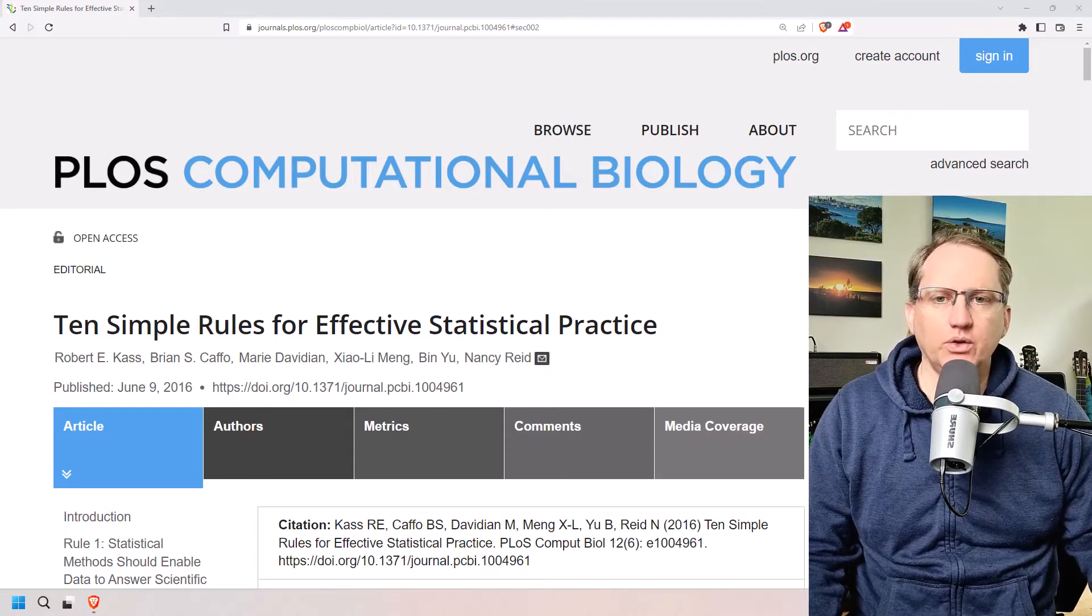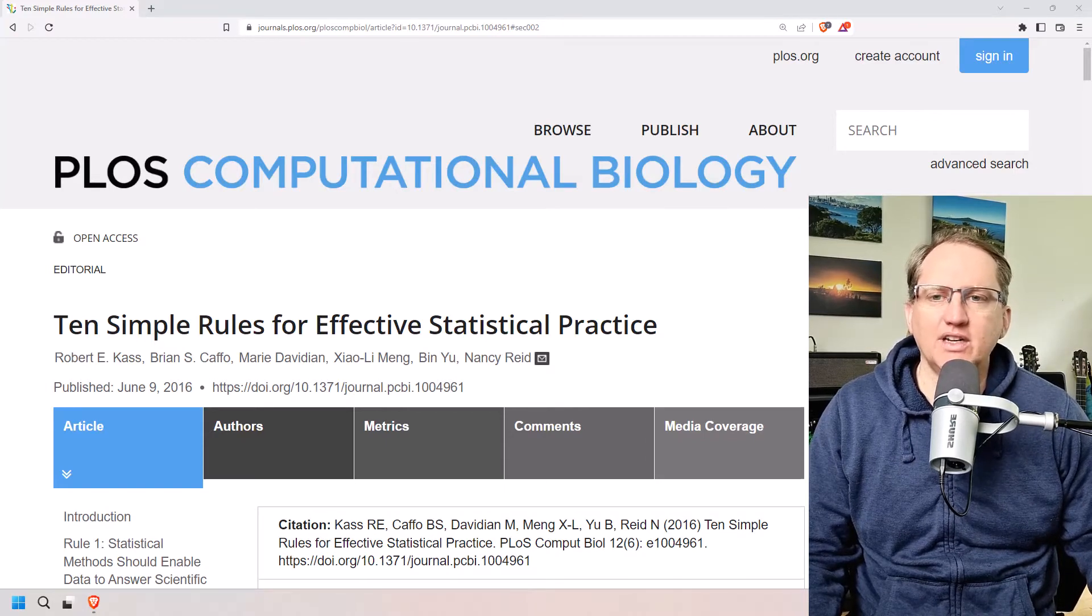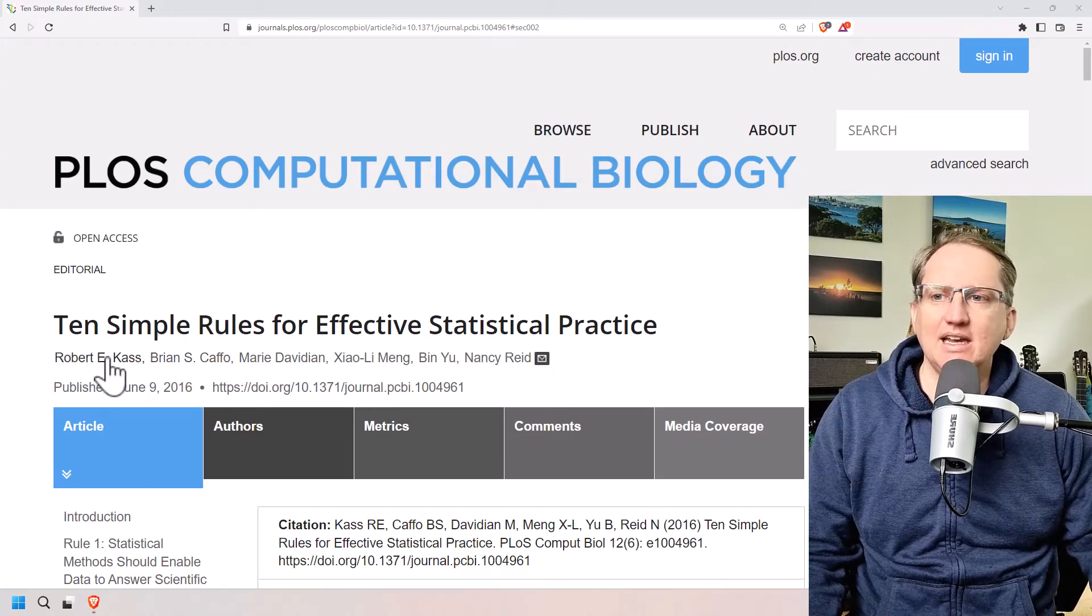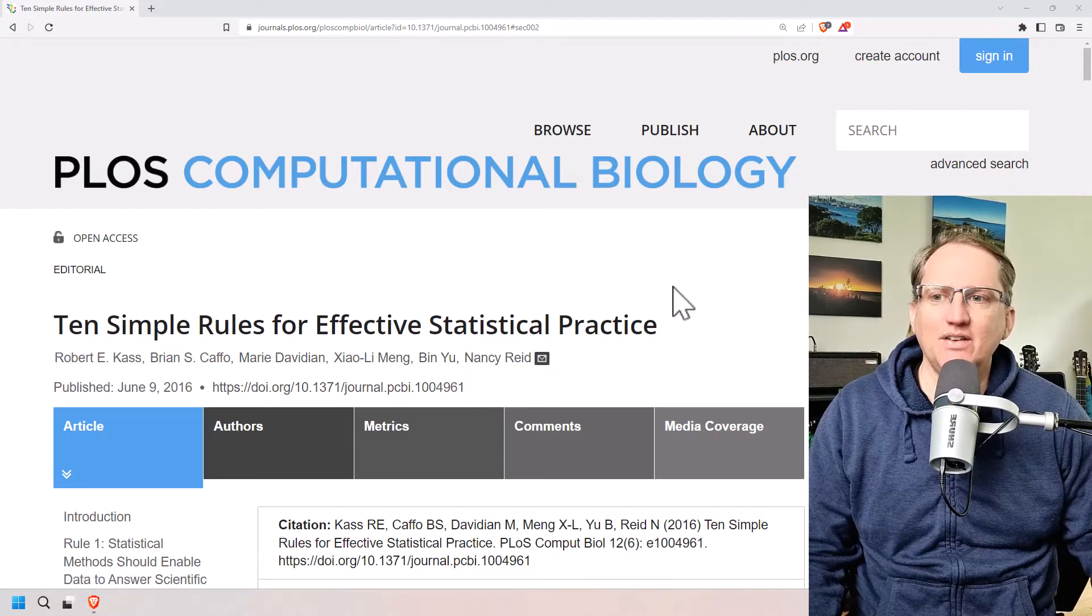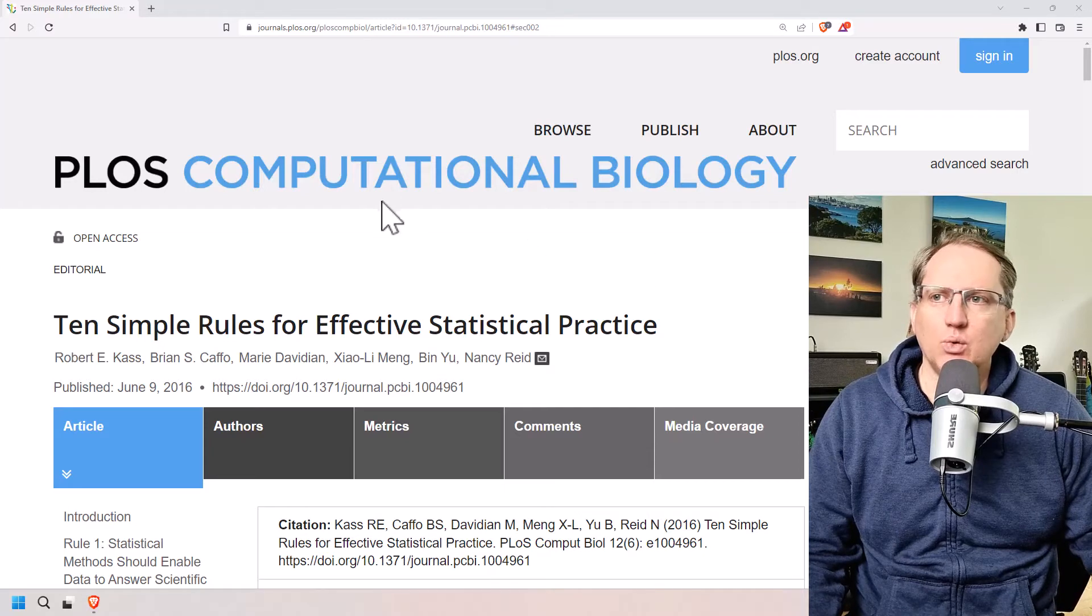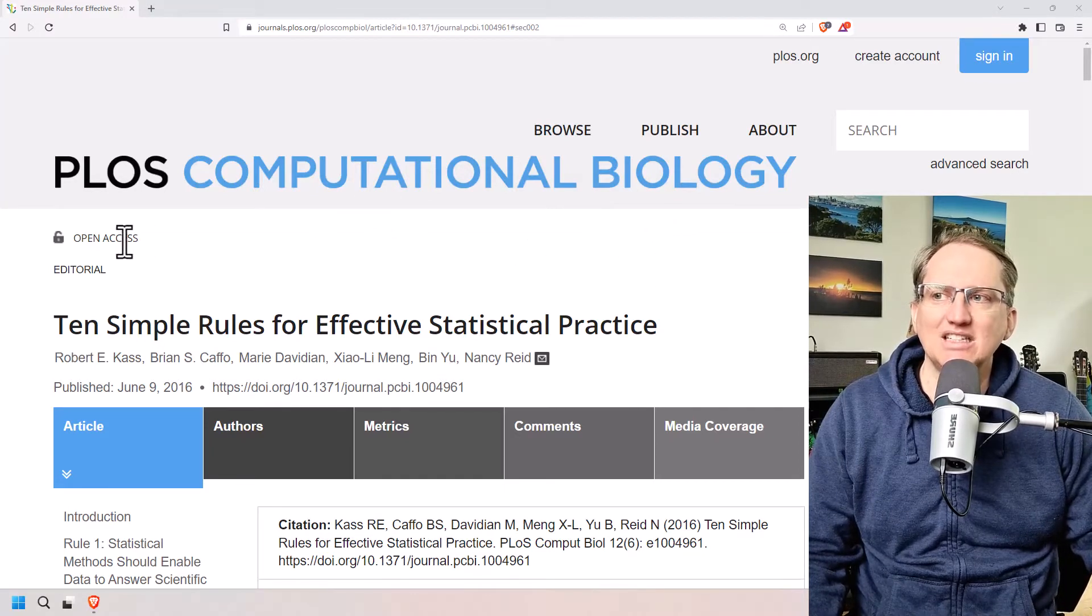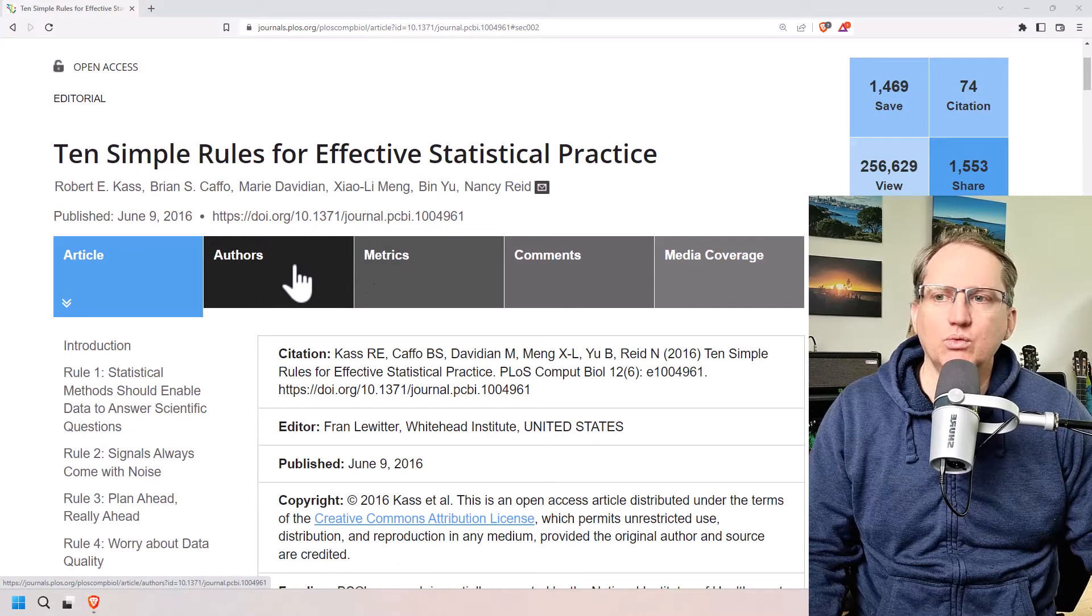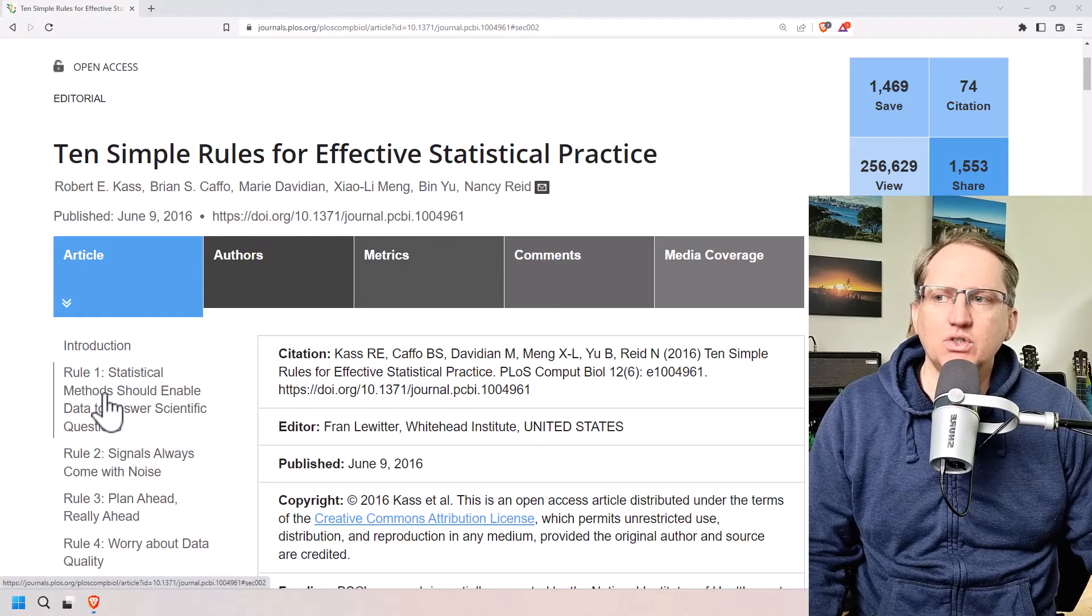So this is in computational biology. I will link up the article. It is open source, so you will be able to read it yourself. And I wanted to go through these ten rules and give a little bit of my own commentary and experience on each of them. So we can see here some heavy hitters in the field of statistics. Computational biology is maybe a little bit of an unusual place for it to be published, but nonetheless it's open access and I think it has some really good rules in here. So there's a little bit of a preamble, but we'll jump straight into rule one.